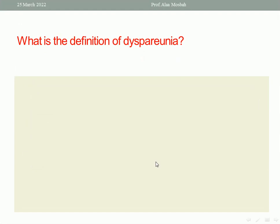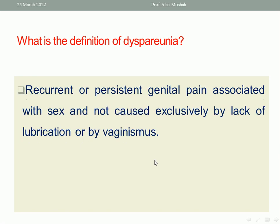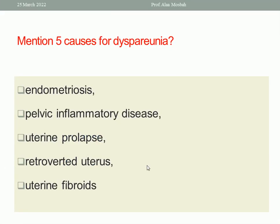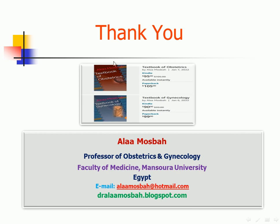The next question: what is the definition of dyspareunia? Dyspareunia is recurrent or persistent genital pain associated with sexual intercourse, not caused exclusively by lack of lubrication or by vaginismus. It could be superficial or deep dyspareunia. Mention five causes: superficial dyspareunia is usually related to vaginal problems; deep dyspareunia causes include endometriosis, pelvic inflammatory disease, retroverted uterus, fibroids, and ovarian cysts.